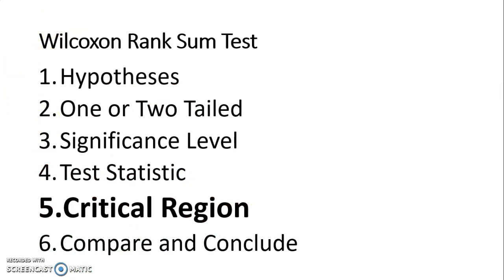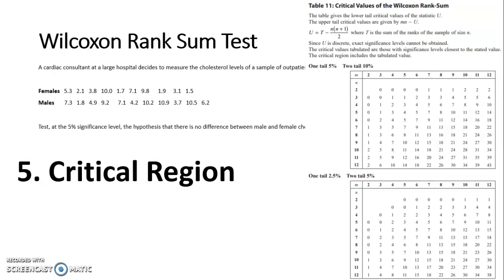Then we come to the critical region. Just like the Wilcoxon and paired Wilcoxon test, it has its own tables. These are table 11, the last one. As you can see at the top, we have the U test statistic that you need to calculate. It also tells me that the table gives the lower critical value, so I always use the lower test statistic.